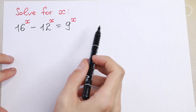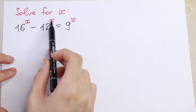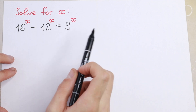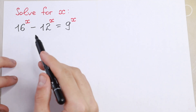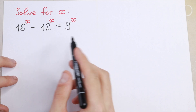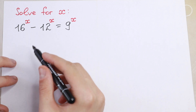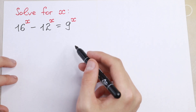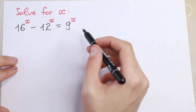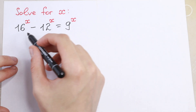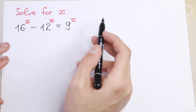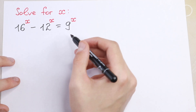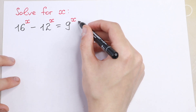This equation is really hard because we have all exponents and all different bases. But I want to show you a really good trick for how we can solve this equation easily. First of all, take a look — we need to divide both sides by 9 to the power x.